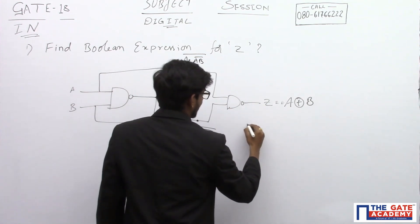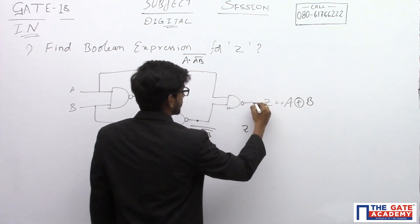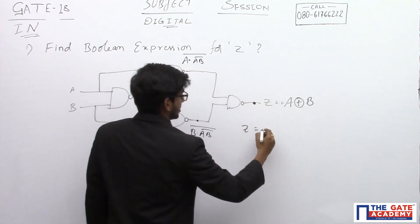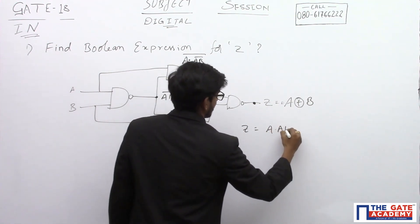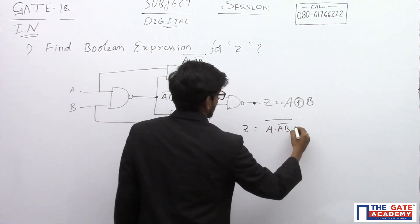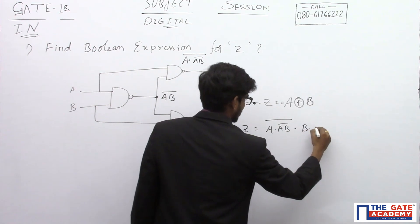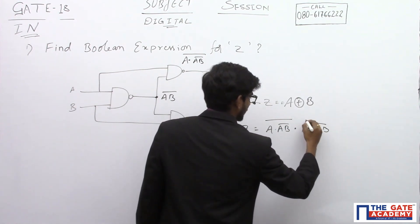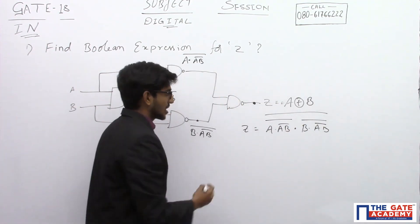Now, finally we will get Z equal to output of this gate is A bar into B into A, B bar and then whole bar.